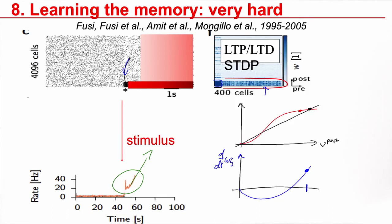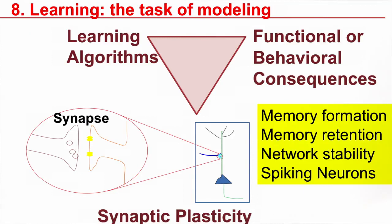So, the situation now is, for a modeler, for a theoretician, we want memory formation, we want memory retention, but we also want network stability and the whole thing with spiking neurons. So, we need to combine synaptic plasticity rules with behavioral consequences and formulate learning algorithms that are, in the end, stable and fulfill the functions we want. How can we do this?